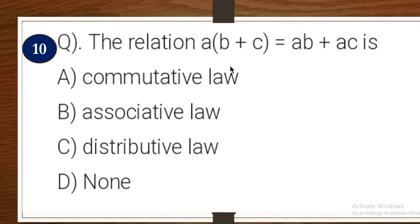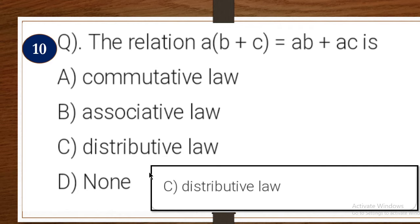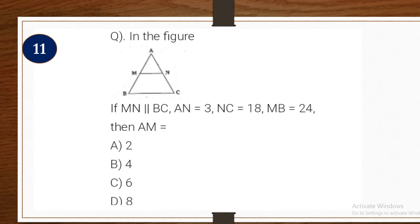Next one: the relation A × (B + C) = A×B + A×C is — options include cumulative law, associative law, D: none, or distributive law. This is a direct question. The answer is the distributive law, so C is the right answer.